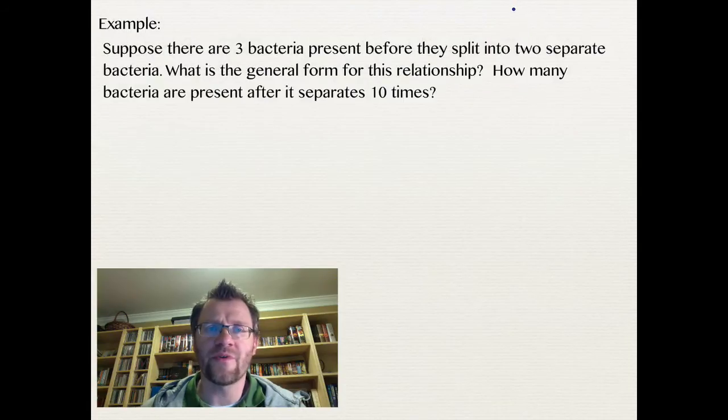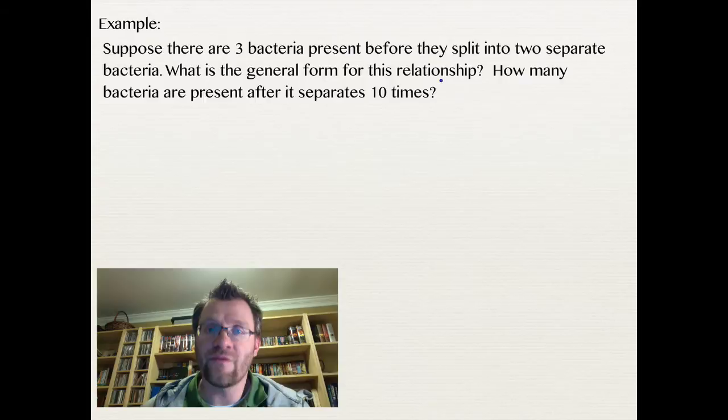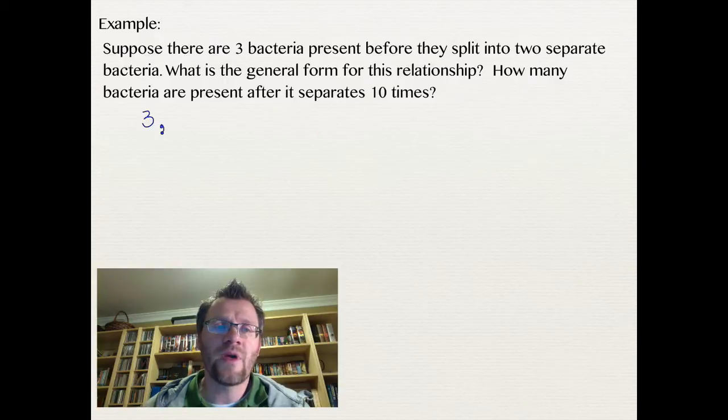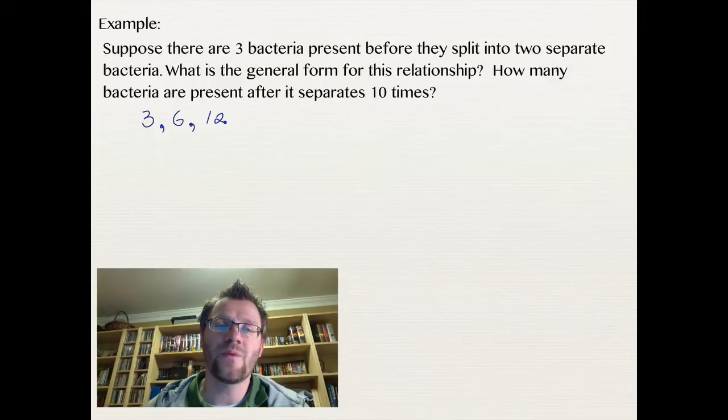So here's our first example. It says, suppose there are three bacteria present before they each split into two separate bacteria. What's the general form for this relationship? And how many bacteria are present after it separates 10 times? So we're starting off with three. And as in every one of these examples that we do, you should always try and write out your sequence. And then each of these bacteria split, so that now becomes 6. Each of those split, that becomes 12. Each of those split, that becomes 24.